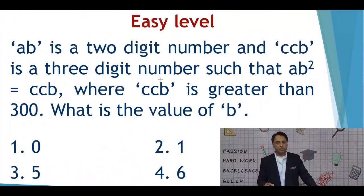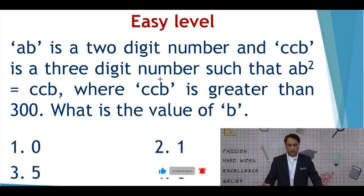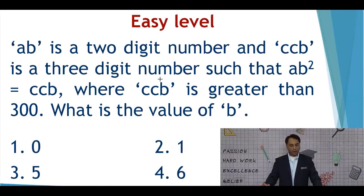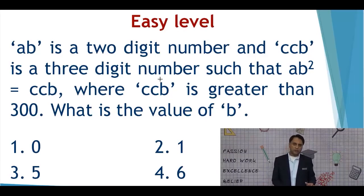Let's take a look at the easy level question. AB is a two-digit number and CCB is a three-digit number such that AB whole square is equal to CCB, where CCB is greater than 300. What is the value of B? The options given are 0, 1, 5, and 6.